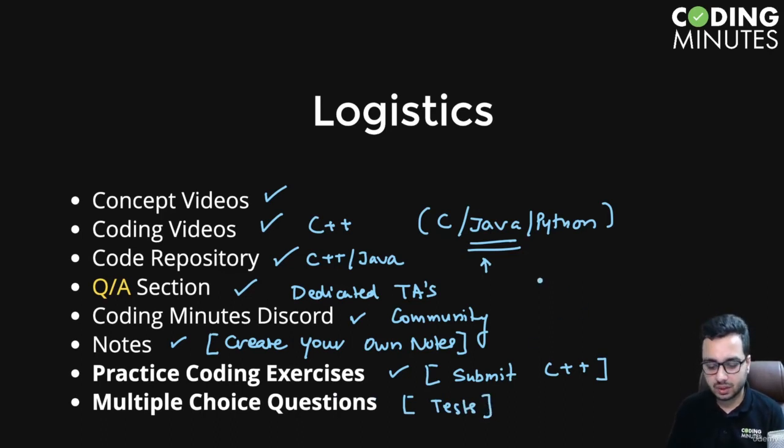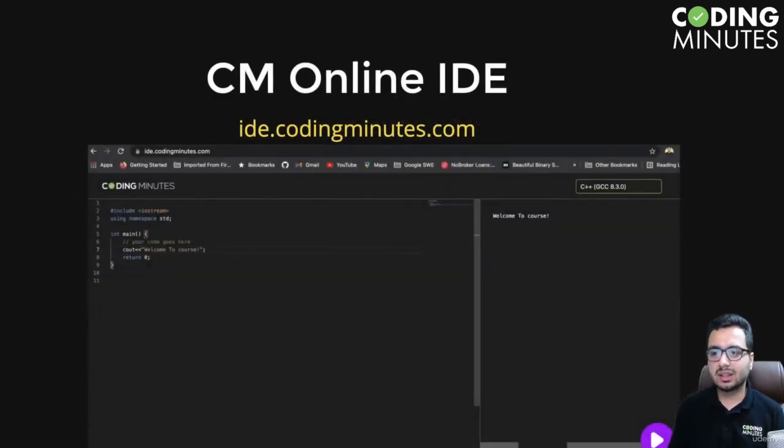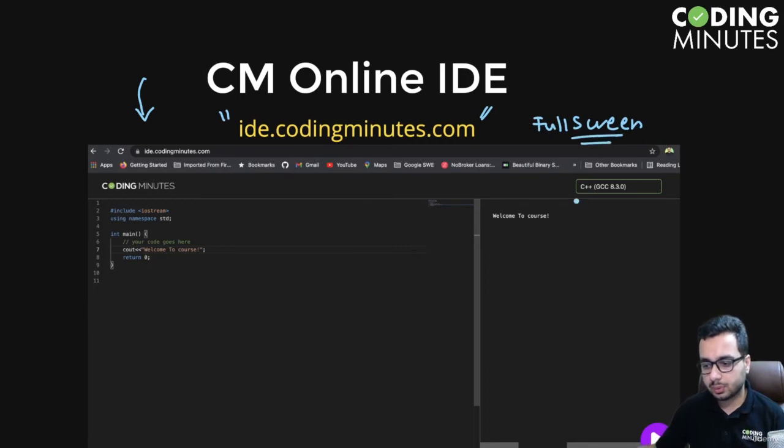One thing people get stuck on in the beginning: we are using features of C++ 11 or higher. Sometimes these features may not work in your local IDE. You can upgrade the GCC version in your local IDE or compiler version, or use our online IDE at id.codingminutes.com. You can run and save your codes online. It's a full-screen IDE supporting multiple languages including Java, Python, Node, and many others. You can practice your codes on our online IDE as well.